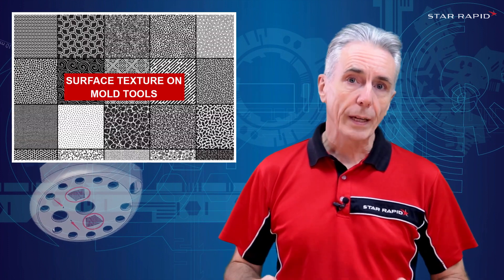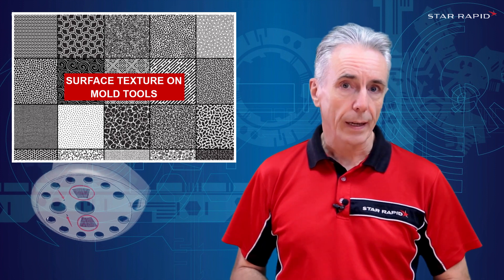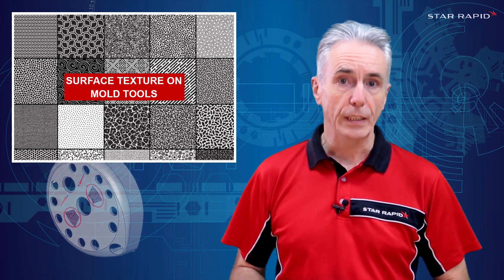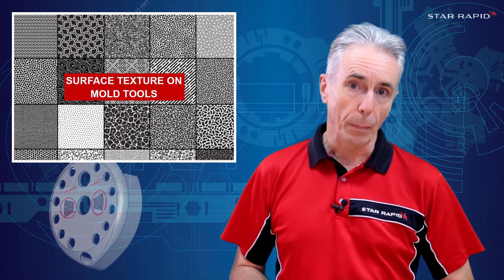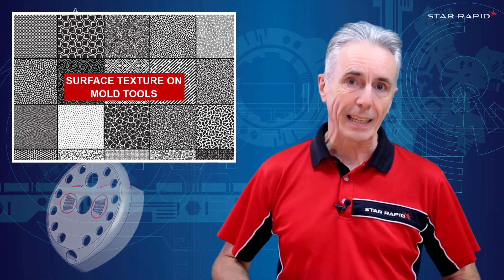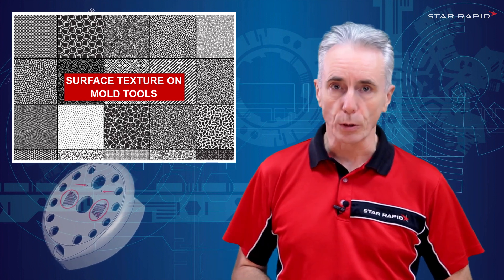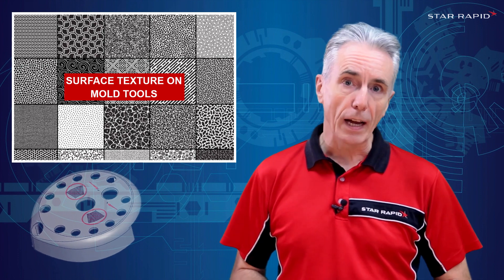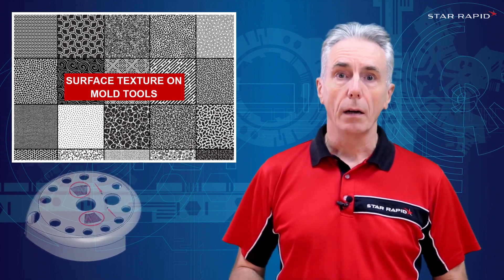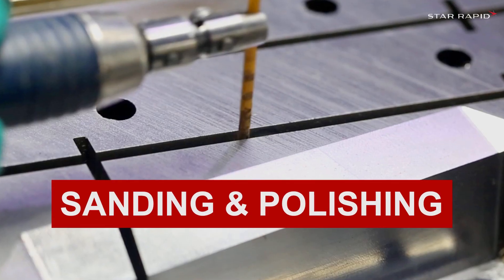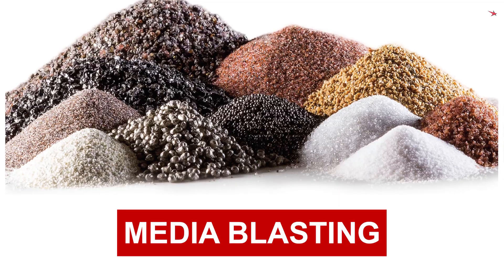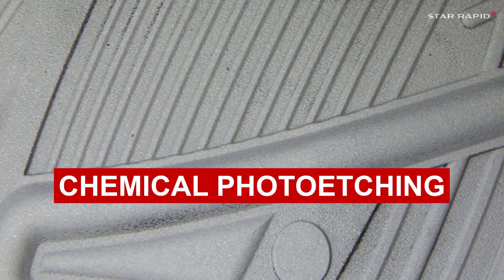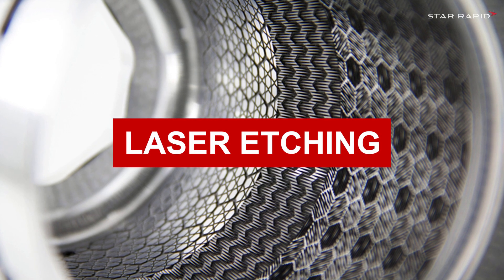In this episode, we're going to take a deeper dive into one specific application for surface texturing: how are textures applied to plastic injection mold tools? The subject can be complex, but we'll stick to the five most common methods. These are sanding and polishing, EDM spark erosion, media blasting, chemical photo etching, and laser etching.